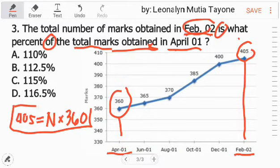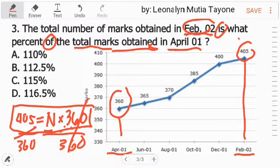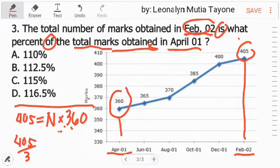Is equal. What percent? So let N be that percent and multiply by 100% later, because percentage is what we're looking for. So that our N will have a percent sign, that's why we multiply by 100% later. Of, that's multiplication. Of the total marks obtained in April 01, April 2001, so 360. So this is now our equation. We need to find N. So let's isolate N. How to isolate N? When this 360 is multiplying, it divides on the other side. So it becomes 405 divided by 360.